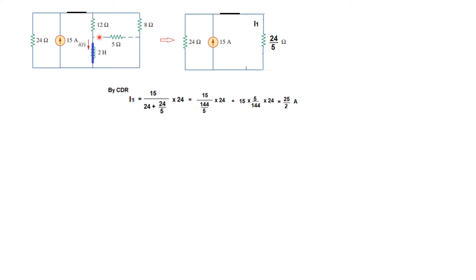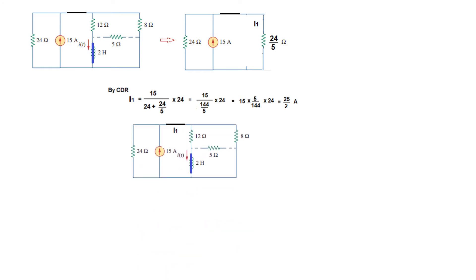We found the total current I1. Now we need to find just this branch. Again we will use CDR — dividing I1 by total resistance 12 plus 8, and multiplying by the opposite arm. We need to find it here, so the opposite arm is 8. So I0 comes out to be 5 ampere.